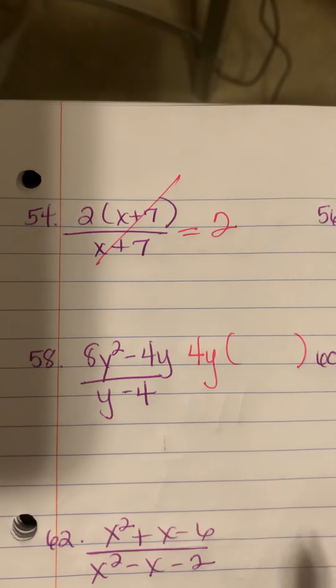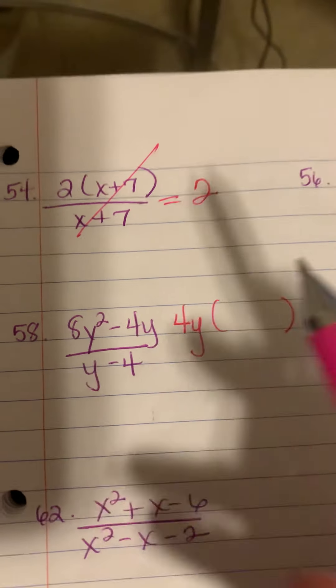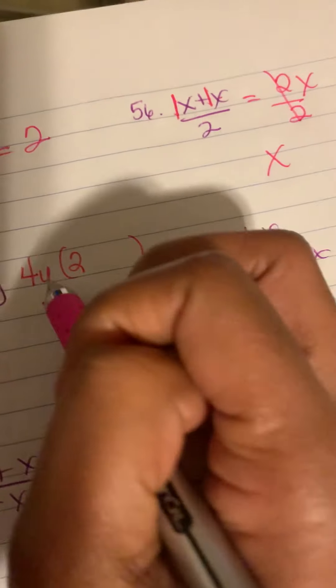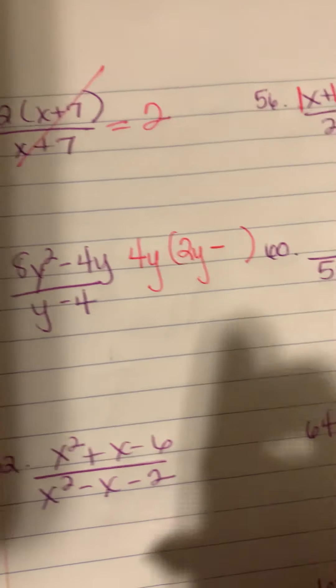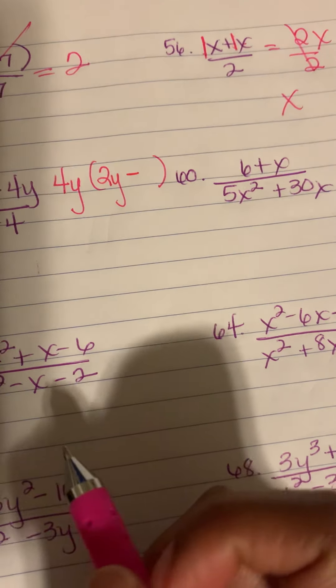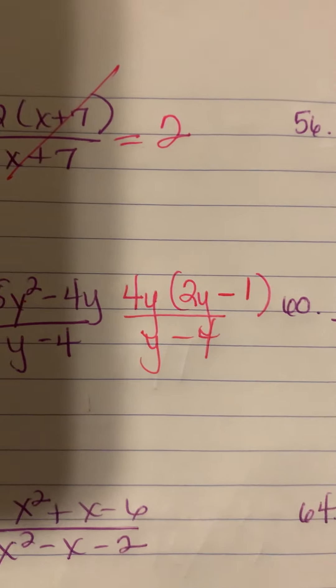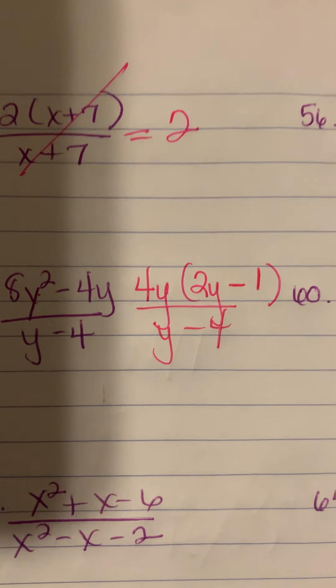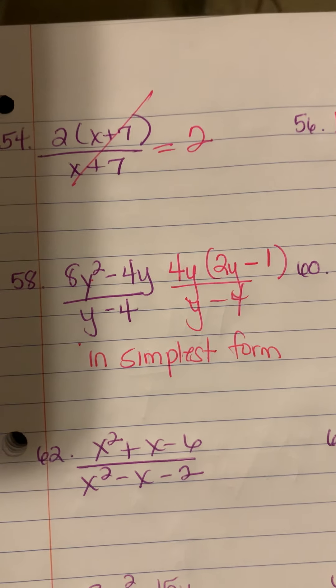For number 58, I need to do some factoring. Factor tree: I have four y — I need eight, so four times two gives eight. I have one y and I need two total, so I need one more. Minus sign — I need four y; I have the four and the y so I just need one. Working it all out: y minus four. I cannot cancel anything — this is in simplest form.